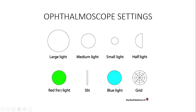Fine details — especially the nature and appearance of blood vessels on the retina — are easily seen with the red-free light. Use the slit light when you want to define or see contour lesions on the retina very well.